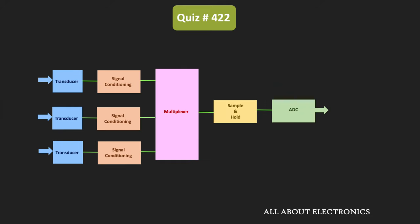Many times a data acquisition system consists of more than one channel, but for the conversion it has only one ADC. In such a case, the system also consists of a multiplexer. What the multiplexer does is select a particular channel for a specific interval, during which the signal of that channel is acquired and converted into digital form. Then the multiplexer selects another channel and the signal of that channel is acquired.